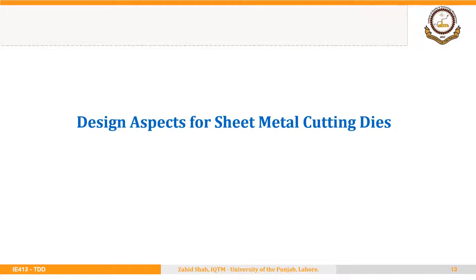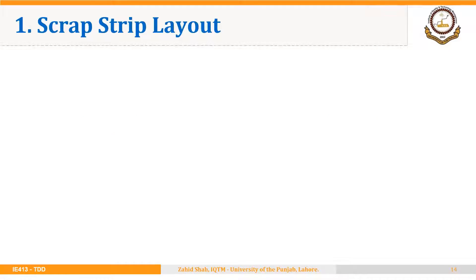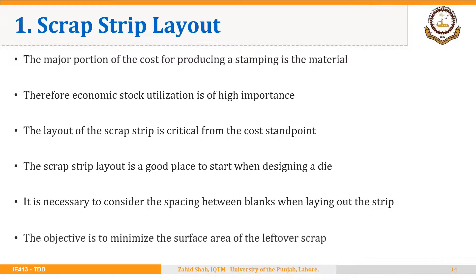We are going to start our discussion on design aspects for sheet metal cutting dies. First, we will discuss scrap strip layout. The major portion of the cost of producing the stamping is the material — material cost is a major cost whenever we are producing a product. That is true for sheet metal working operations as well. Therefore, economic stock utilization is of high importance. The layout of the scrap strip is critical from the cost standpoint, and we have to make the scrap strip layout such that the material utilization is maximized or leftover scrap is minimum.